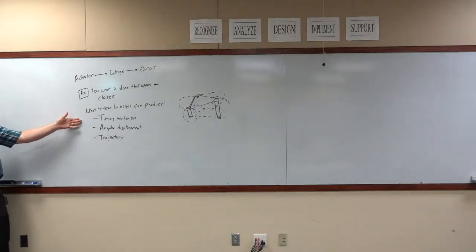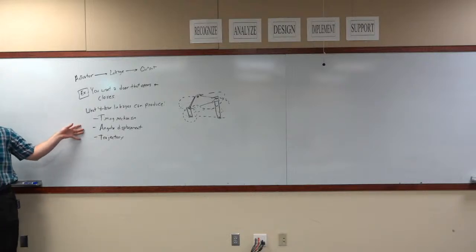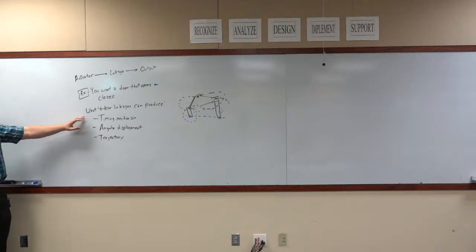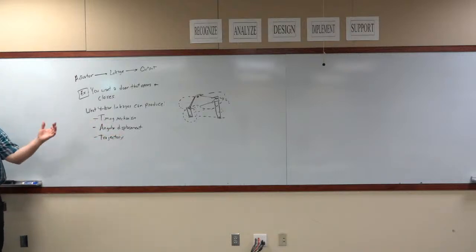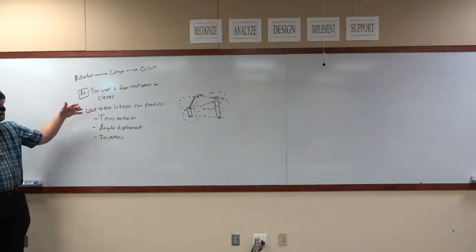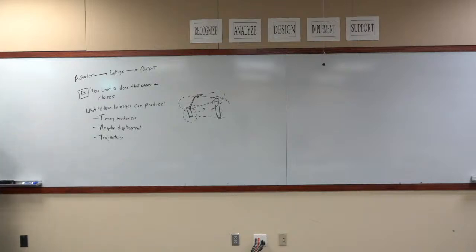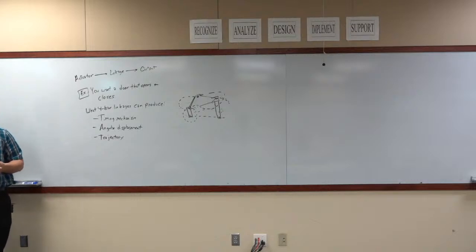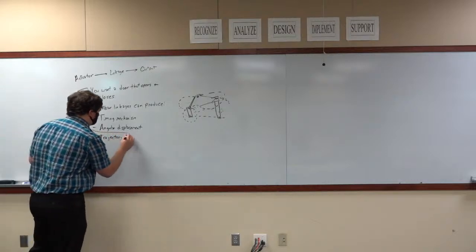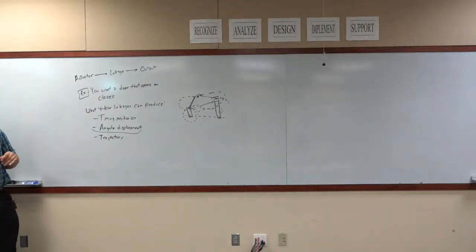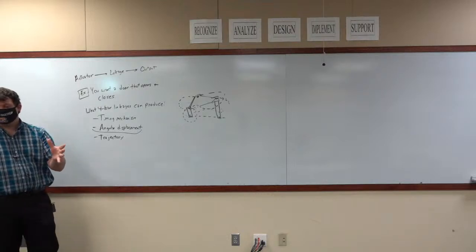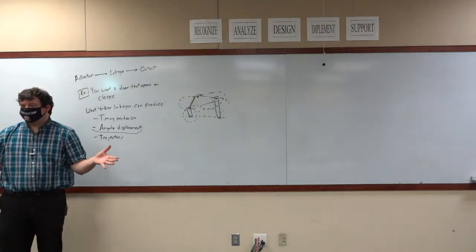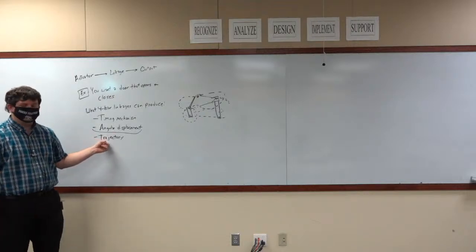These are the three types of outputs a four bar linkage can produce, and these are the three reasons why people create four bar linkages. It's to transfer power over a specific angular displacement, transfer power at a certain time, or transfer power in a certain trajectory. If we're designing a door that opens and closes, which one are we going to choose? We're probably going to use angular displacement. The best way to design for timing and trajectory is to plug your system into SolidWorks and adjust your linkages to see how it changes things.